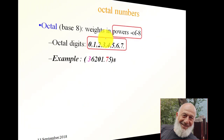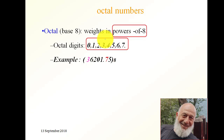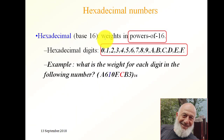In an octal numbering system where the base is 8, the weights are powers of 8. In this number, one digit has a value of 4,096 because its weight is 8 to the power 4, and another has the weight 8 to the power minus 1. For hexadecimal, weights are powers of 16 — for example, a digit has a weight of 16 to the power 2, giving 256; and the digit C has a weight of 16 to the power minus 1.